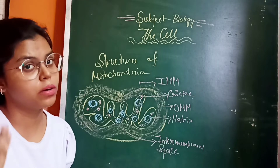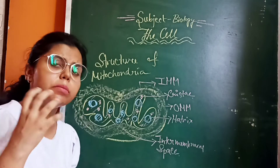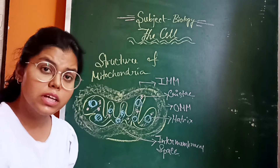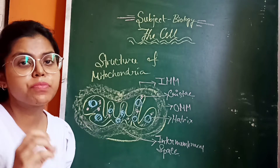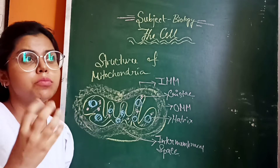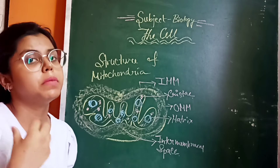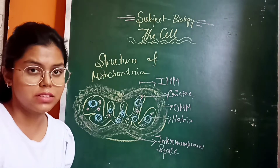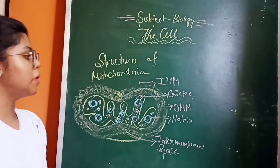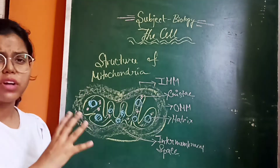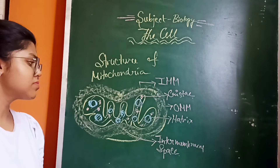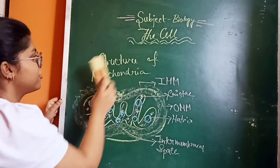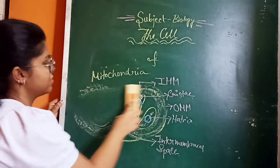In singular number, mitochondria is known as mitochondrion. In some cells there is only one mitochondrion, while in other cells more than hundreds of mitochondria are present.